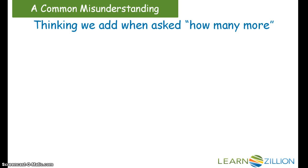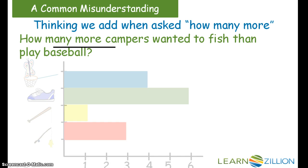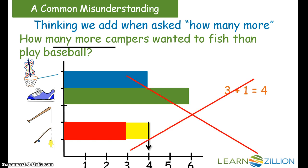A common misunderstanding when comparing information on a bar graph is thinking that we add when asked how many more. For example, how many more campers wanted to fish than play baseball? A misunderstanding would be to add the number of campers that wanted to fish with the number of campers that wanted to play baseball. That would give an answer of four, but that's not correct. Because if only three people wanted to fish and only one person wanted to play baseball, it wouldn't make sense that four more people wanted to fish than play baseball.